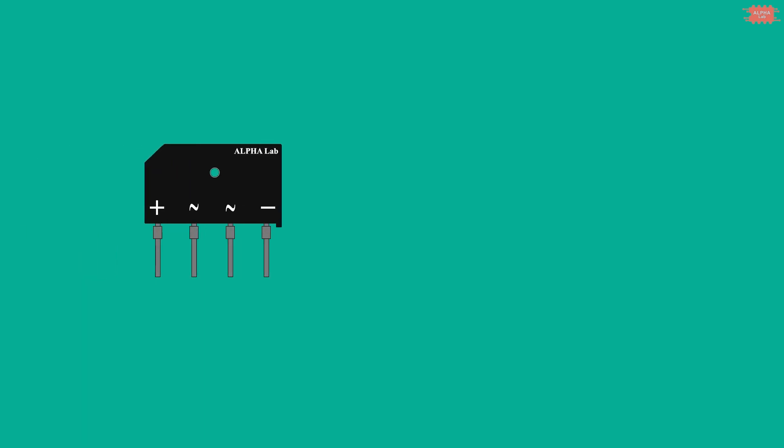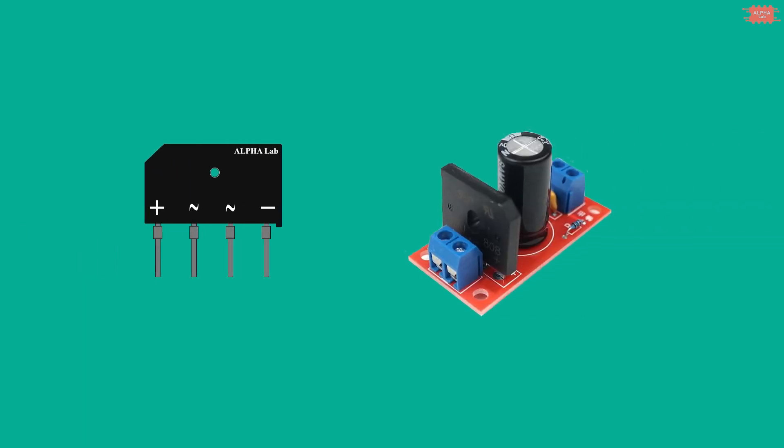Bridge diode is very common in full wave rectifier circuit designs. In essence, it is composed of four diodes. About the bridge diode, I will make another video about it, a full wave rectifier circuit design.